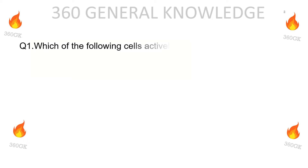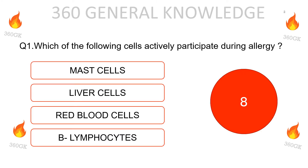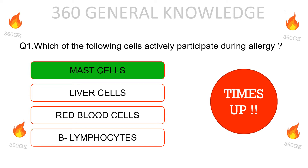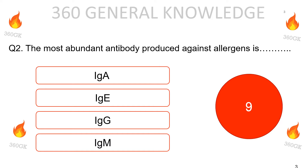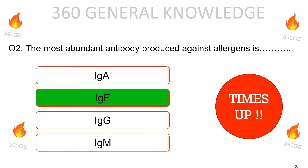Which of the following cells actively participate during allergy? Mast cells, liver cells, red blood cells, or B-lymphocytes. The correct answer is mast cells. The most abundant antibody produced against allergens is IgA, IgE, IgG, or IgM. The correct answer is IgE.